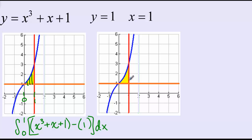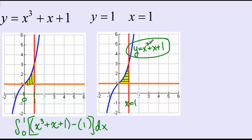Now if we wanted to set this integral up in terms of y, we would be drawing horizontal rectangles. We have the line x equals 1 as our rightmost function, and y equals x cubed plus x plus 1 as our leftmost function. But here's the problem: we would need to take the equation y equals x cubed plus x plus 1 and solve for x. If we want to set this up as an integral in terms of y, we can't solve it for x. There are a lot of equations where you can't solve for x, so in that particular case we're not going to be able to set this up as an integral in dy.